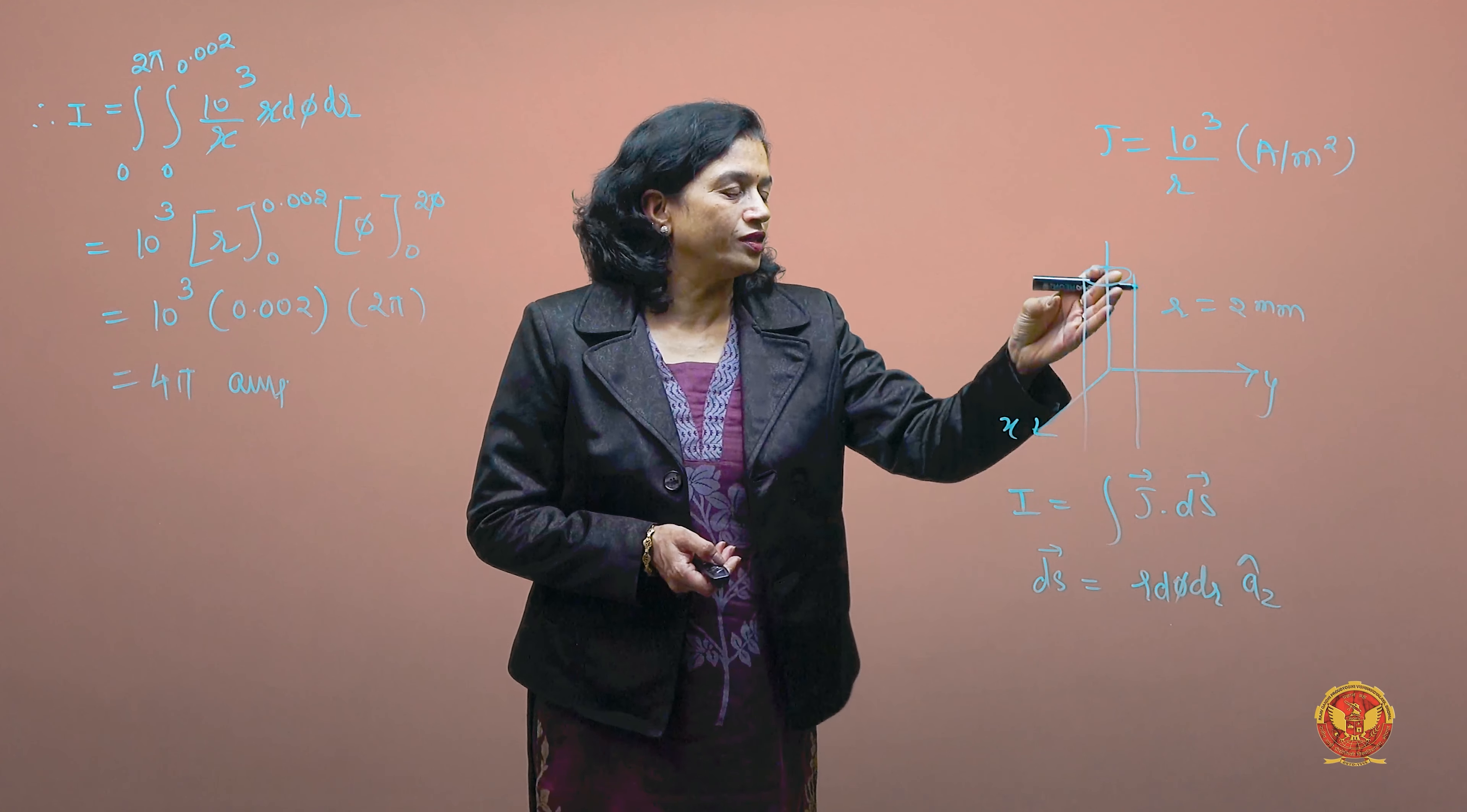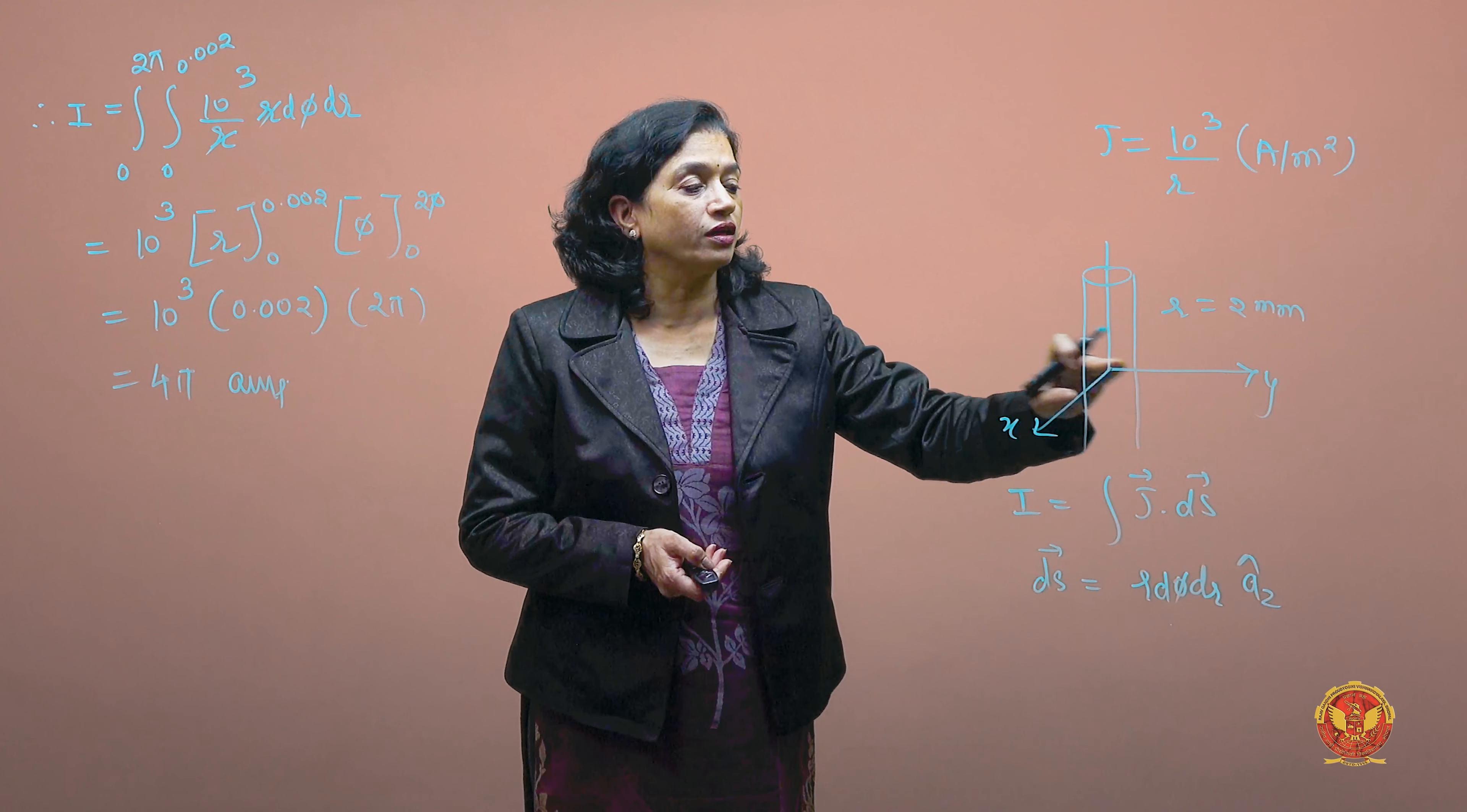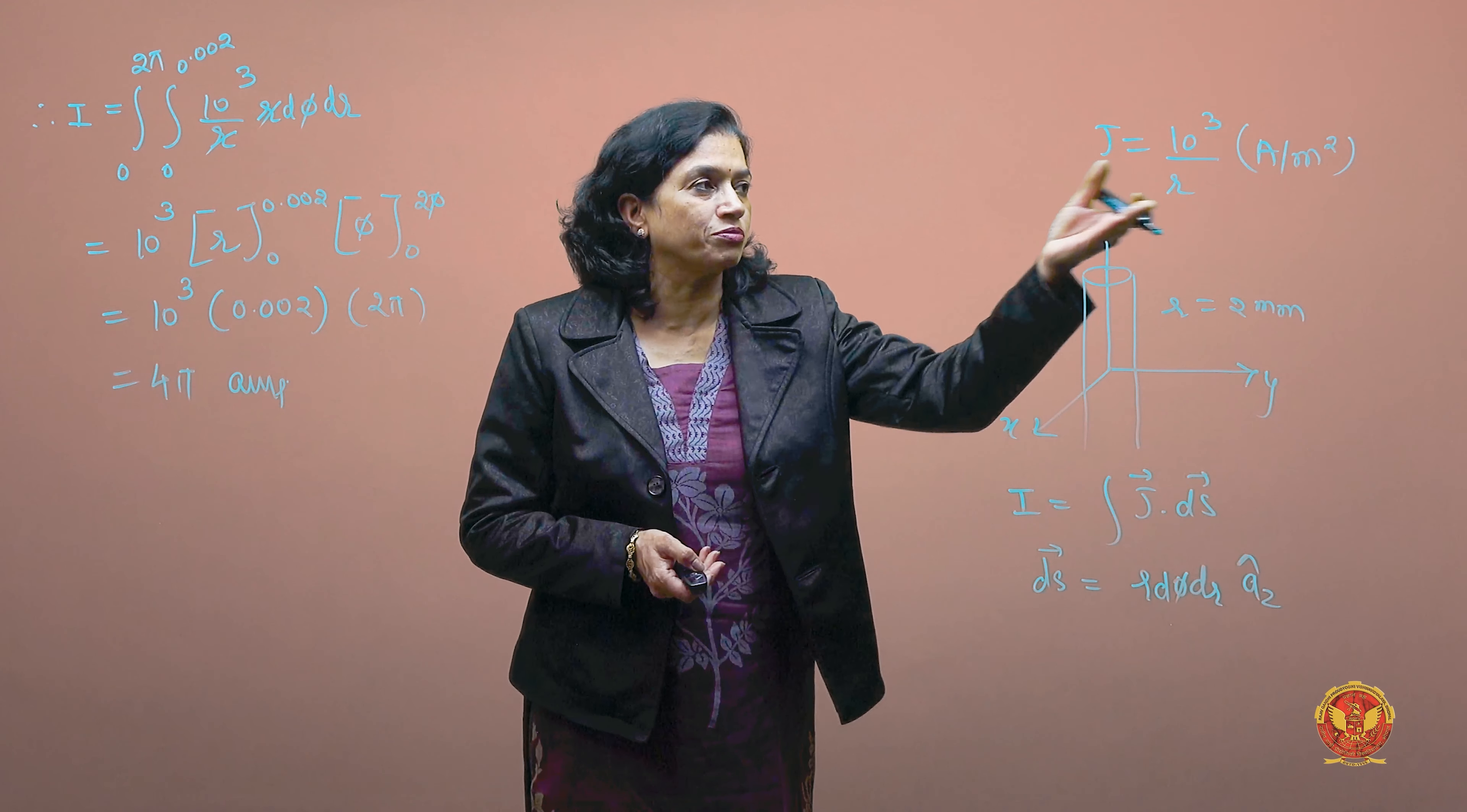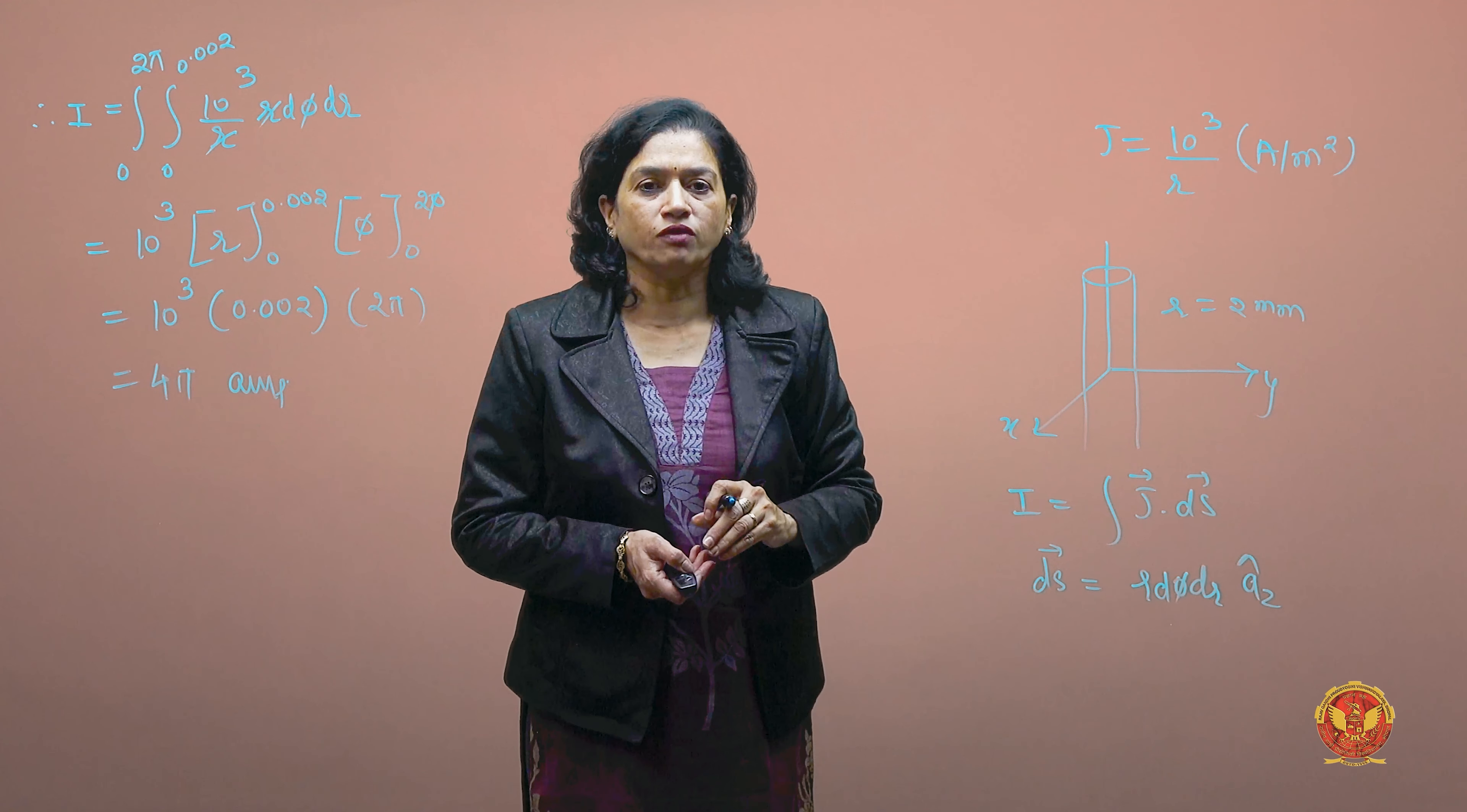Now, in this particular conductor, the current density varies along the radius. The way it varies is given by the expression 10³ divided by r.